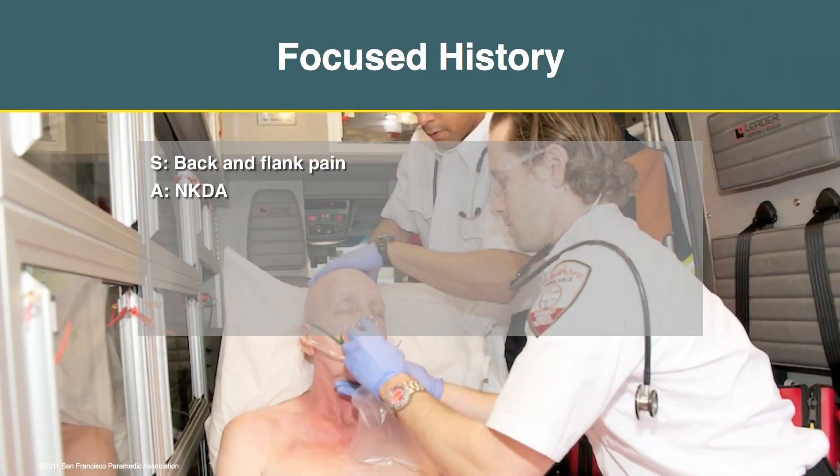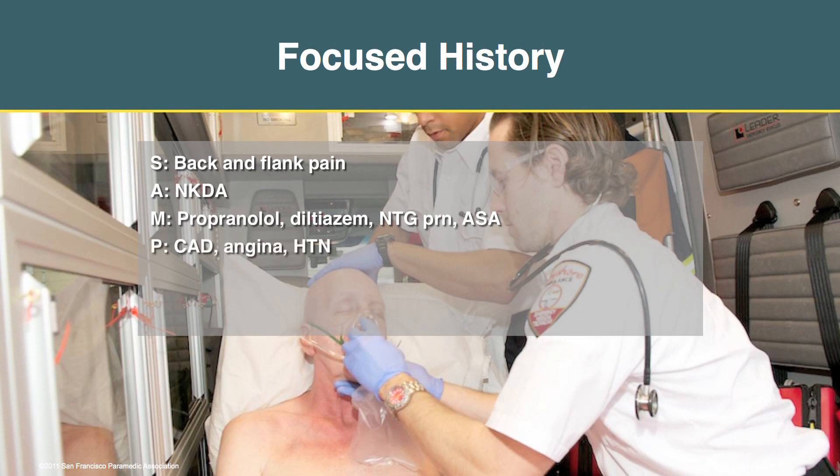Anything else you want to know about the history? What his medical history is at this point. So continuing with the SAMPLE history — for A, he doesn't have any allergies. He takes these medications. What stands out for you? What kind of medications are those? Cardiac meds. Right — hypertensive meds.